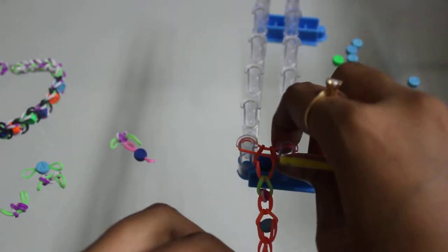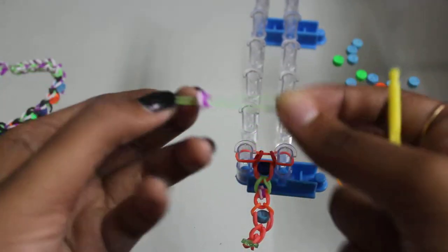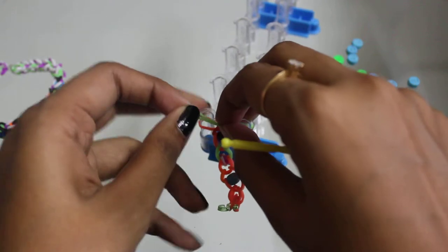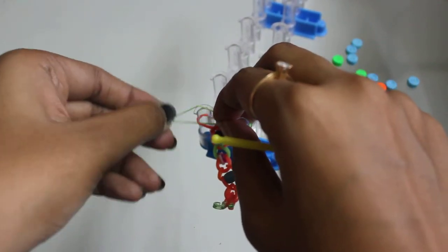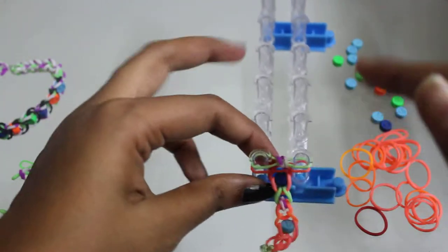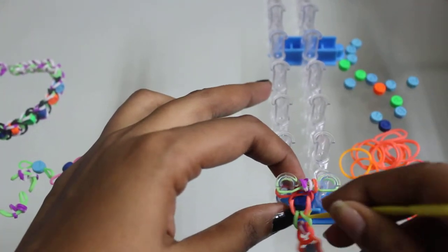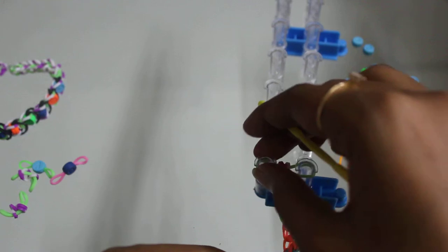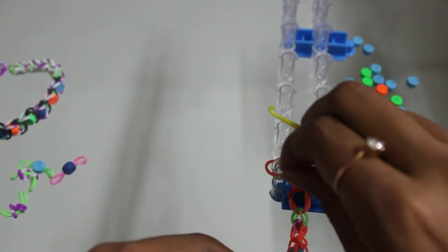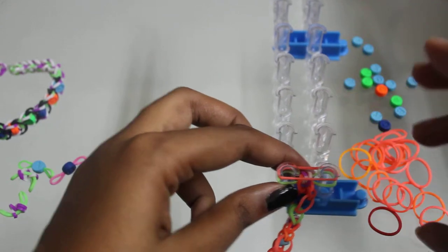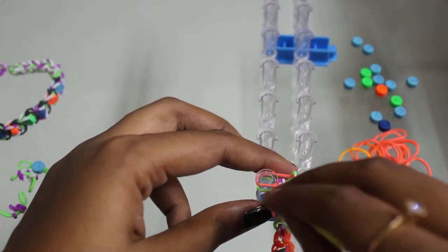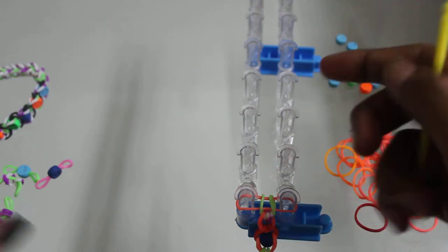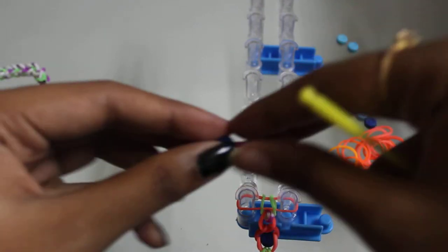Stretch it down. Then take the rubber beaded one, same as you did before. Repeat the step again and again. Lock it properly. Then take another one and lock it properly. Then take your beaded one, place it like this.